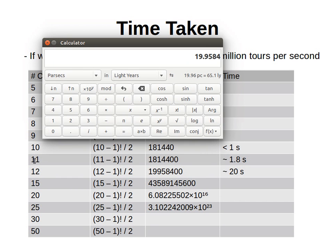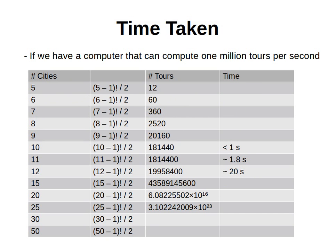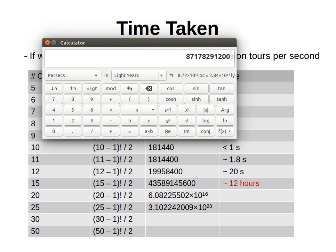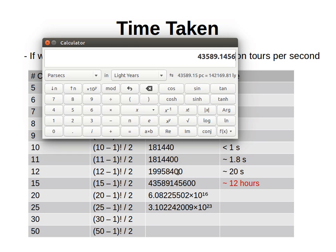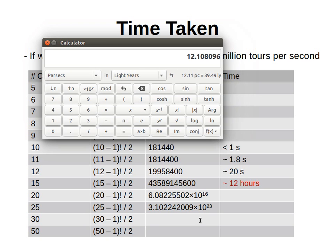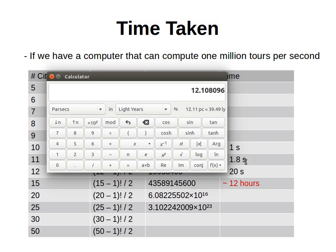What if n is 15? Then 14 factorial divided by 2 is the number of tours. Dividing by 1 million gives seconds, dividing by 60 gives minutes, dividing by 60 again gives hours. So if we have 15 cities, it's going to take our computer — processing 1 million tours per second — about 12 hours.